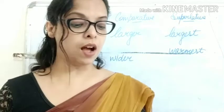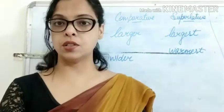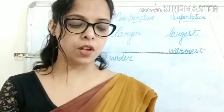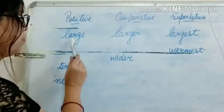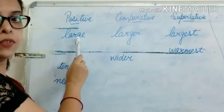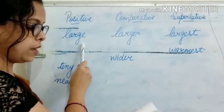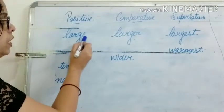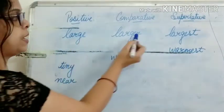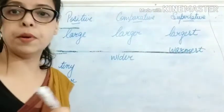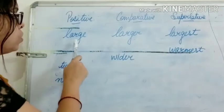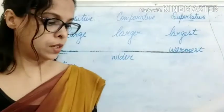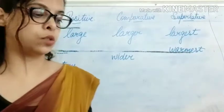The second word is 'large.' Large is the positive degree — the original or usual form of the adjective. So in the first column you write 'large,' then 'larger.' Since it ends with E, we simply add R and ST. So large becomes larger, largest.